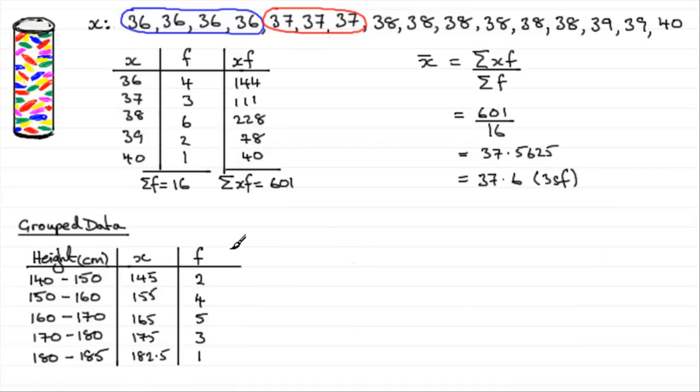And to do that then, following what we did before, we need another column to work out the subtotals, xf. So we need to do 2 times 145. And if you do that, you're going to get 290. And if you put in 4 times 155, you're going to get 620. And 5 times 165, 825, and so on. The next one comes out to be 525, and then 182.5. So we've got our subtotals.